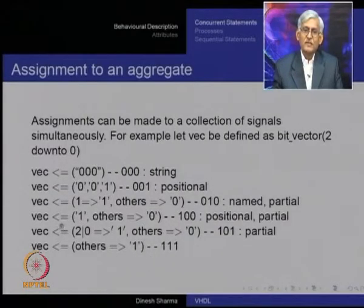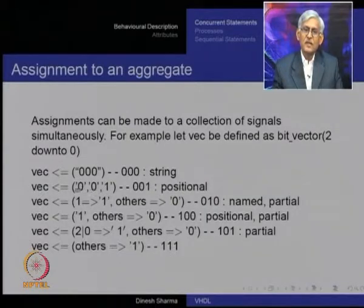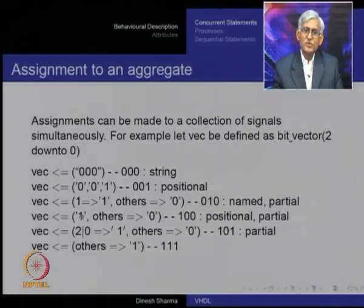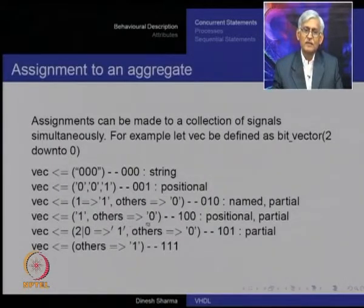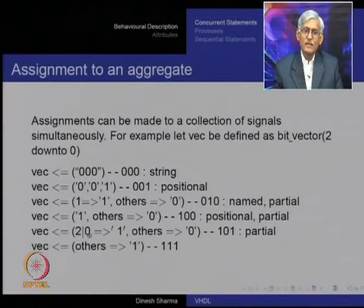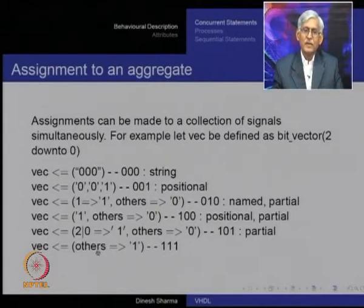In short, various kinds of assignments are possible: you can assign a whole string to all the bits of the vector; assign bit-by-bit positionally; assign a few by name, e.g., to index 1 assign 1 and to others assign 0; assign some bits positionally then use 'others => 0' for the remainder; use more than one index assigned the same value; or use 'others' alone to assign all bits the same value.